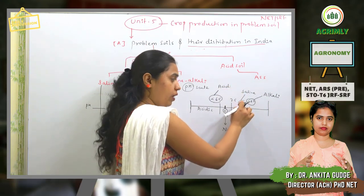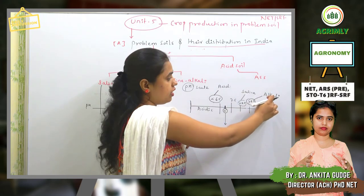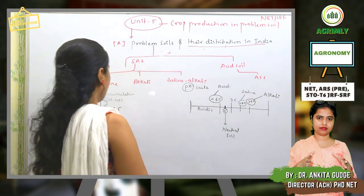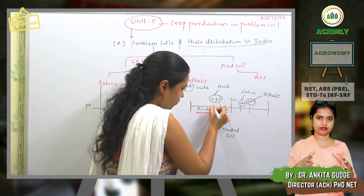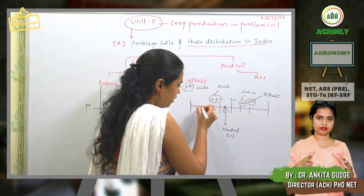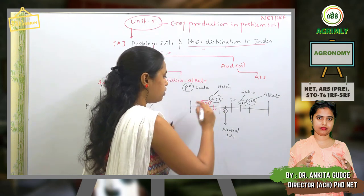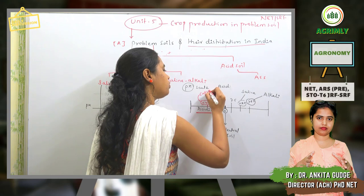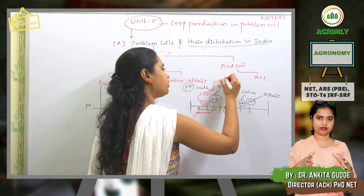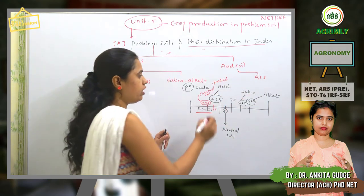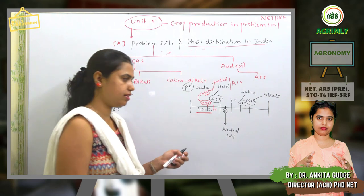To recap: less than 8.5 is saline, more than 8.5 is alkaline. Additionally, at pH 5.5 and below — specifically less than 4.5 — this is known as cat clay soil, also referred to as acid sulfate soil (ASS).